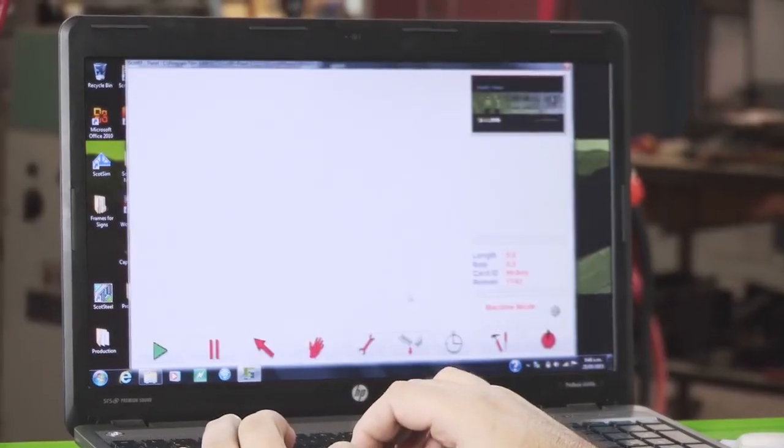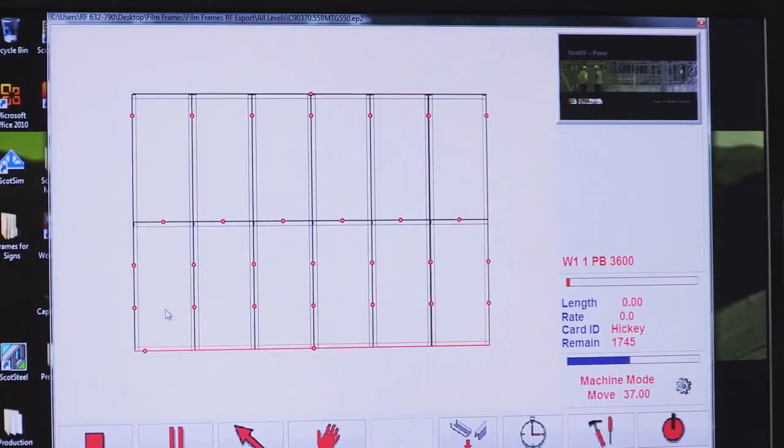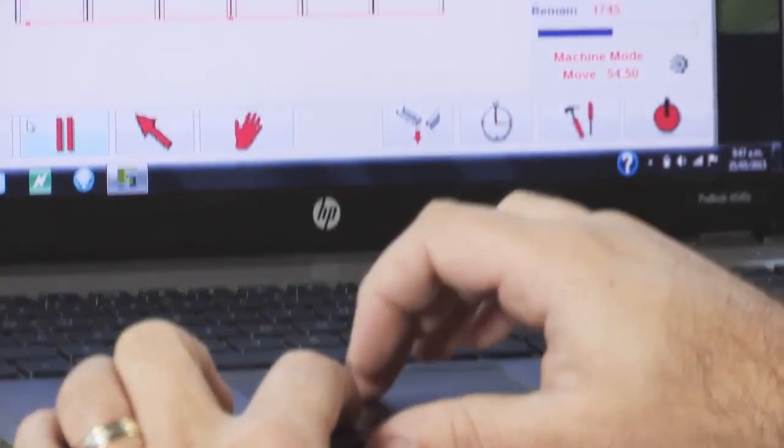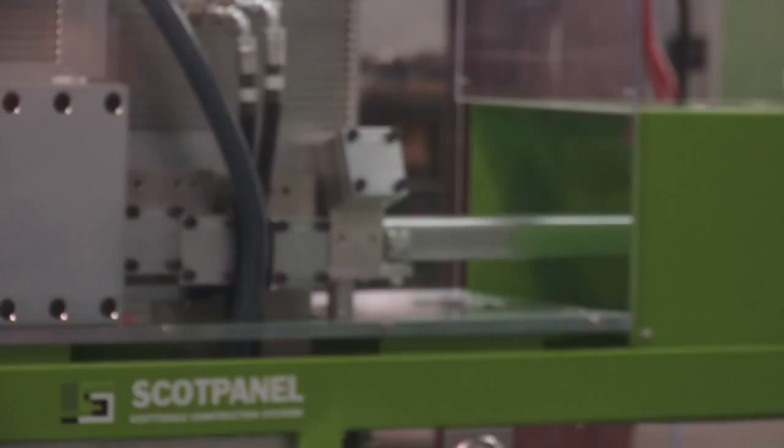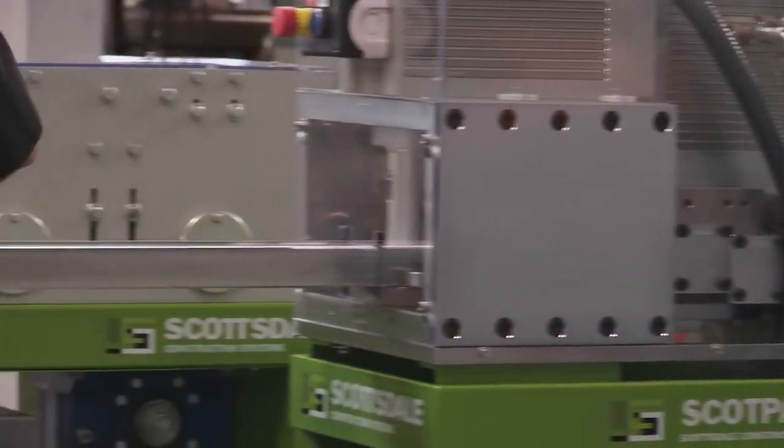The ScotT RF roll former software is easy to use with many powerful tools to improve productivity and bottom line profit. Constant visual representation of the extrusion process keeps the operator fully informed at all times.